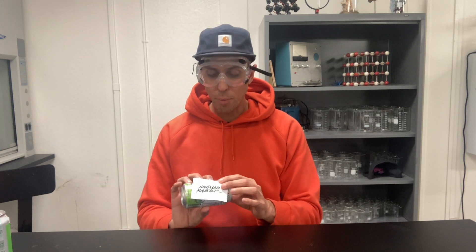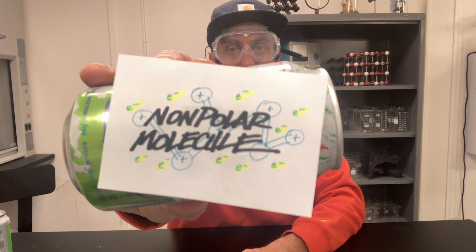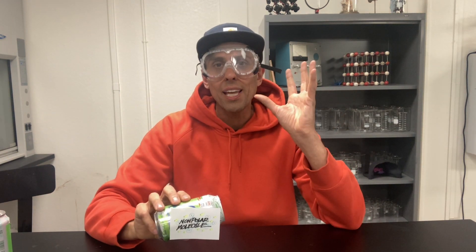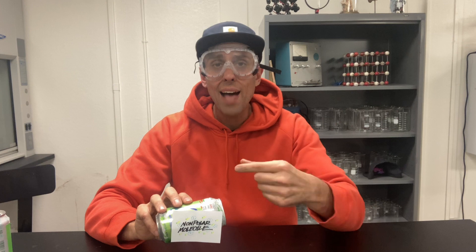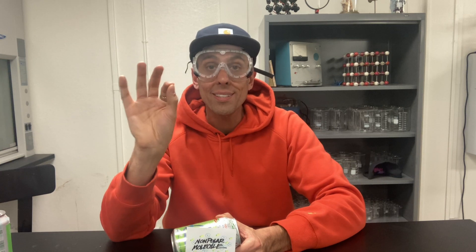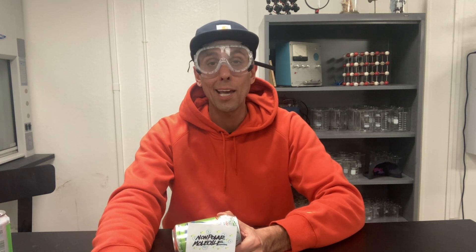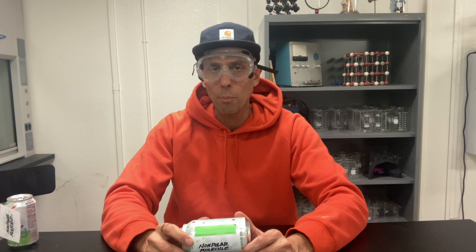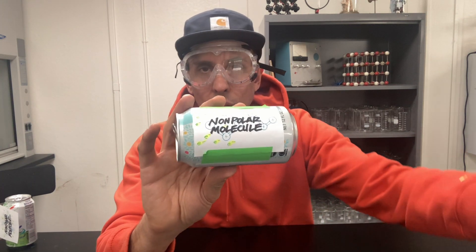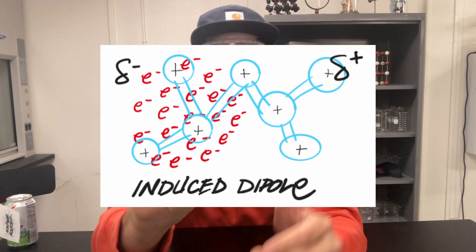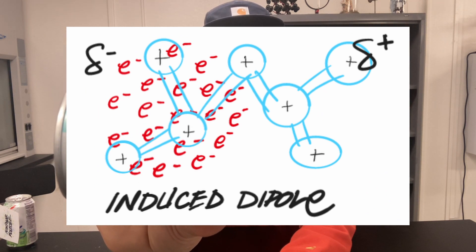When I first showed you this non-polar molecule, I said to pay close attention to the fact that the electrons were evenly distributed. But remember, electrons can move — they're mobile, they're not locked into position. Also remember that when you bring two objects close to one another with the same charge, they repel. So when I brought my balloon close to my non-polar molecule, as the negative charge of the balloon comes close to the molecule, the electrons are repelled. As you can see in this image, they're now on the far side of the molecule — pushed all the way to the other end.